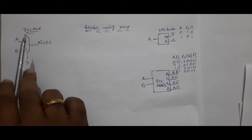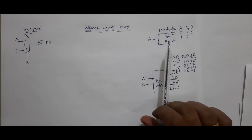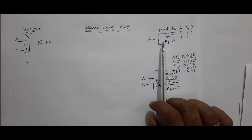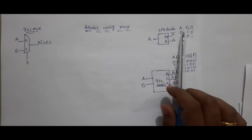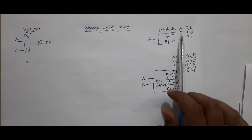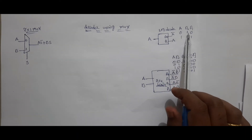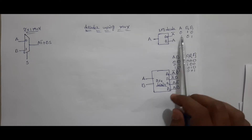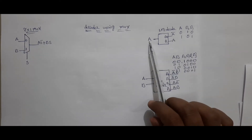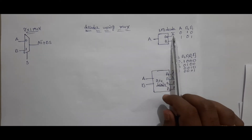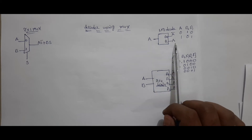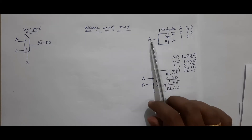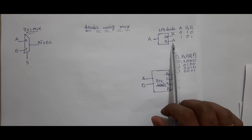This is the 2x1 MUX. Here the 1x2 decoder is shown. See here: if A is 0, D-naught is selected; if A is 1, D-one is selected. If you do a K-map, you will get A and A-bar.